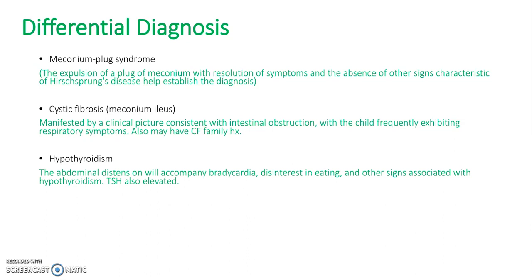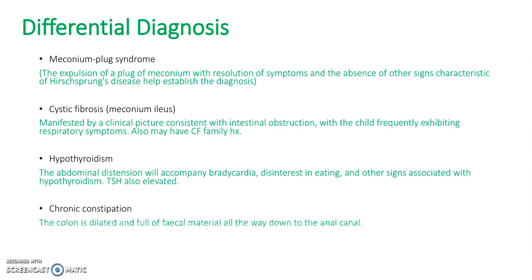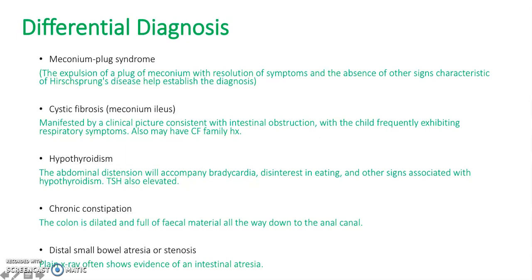Hypothyroidism — patients with hypothyroidism will have abdominal distension, and they will also have bradycardia, disinterest in eating, and other signs associated with hypothyroidism. You can test for this by checking their TSH levels, which will be elevated. Chronic constipation — in chronic constipation, the colon is dilated and full of fecal matter all the way down to the anal canal. Distal small bowel atresia or stenosis — a plain X-ray often shows evidence of an intestinal atresia.